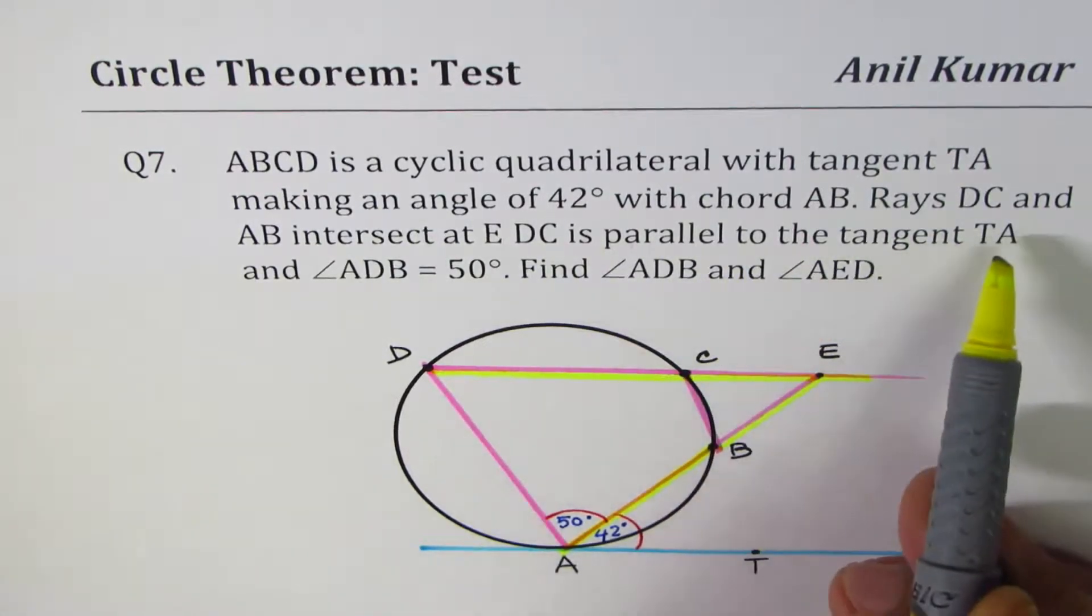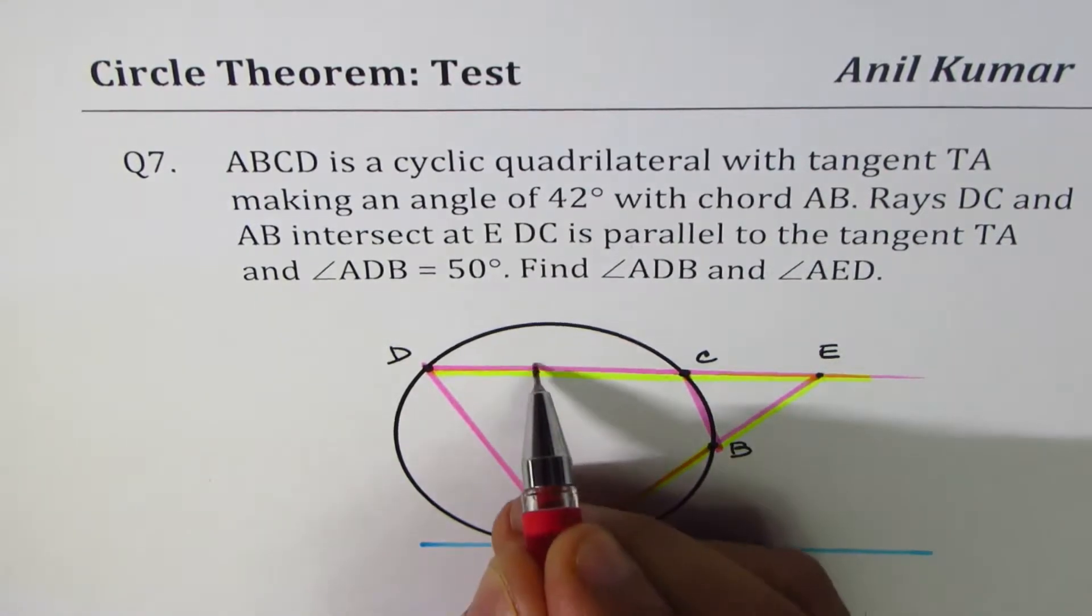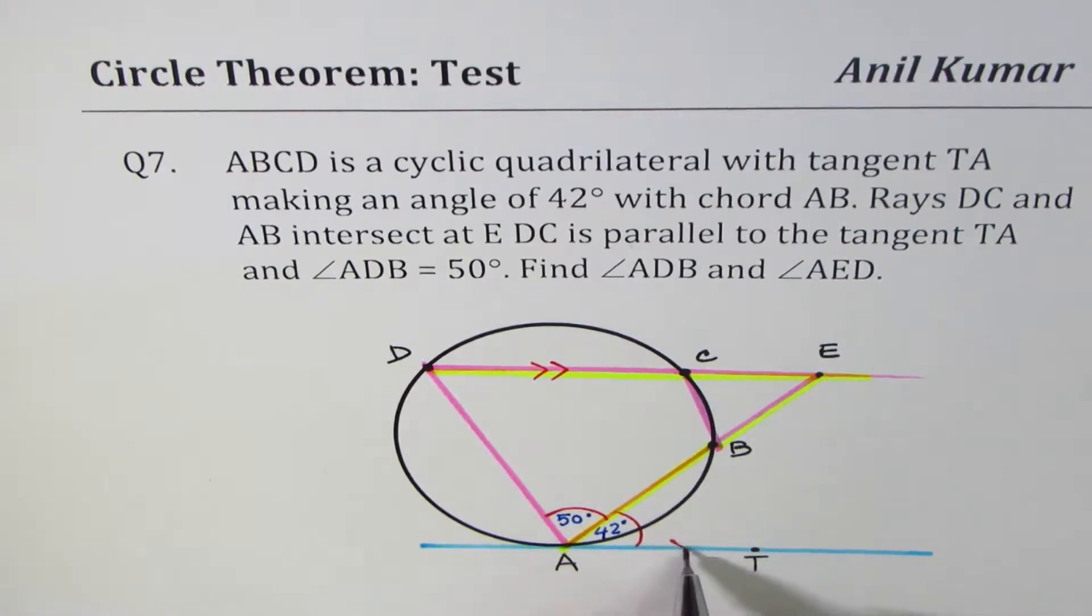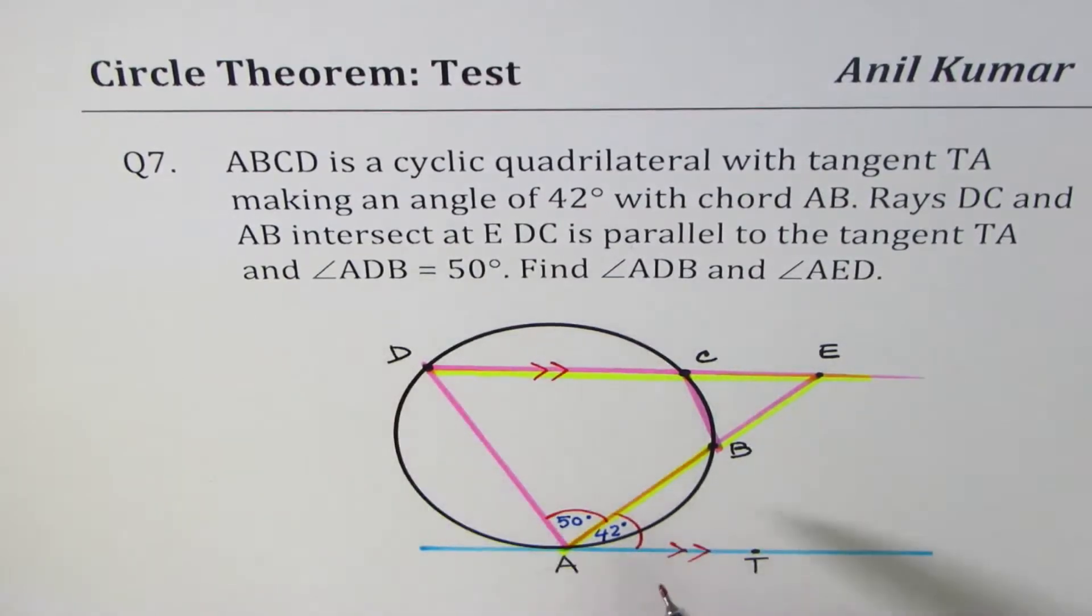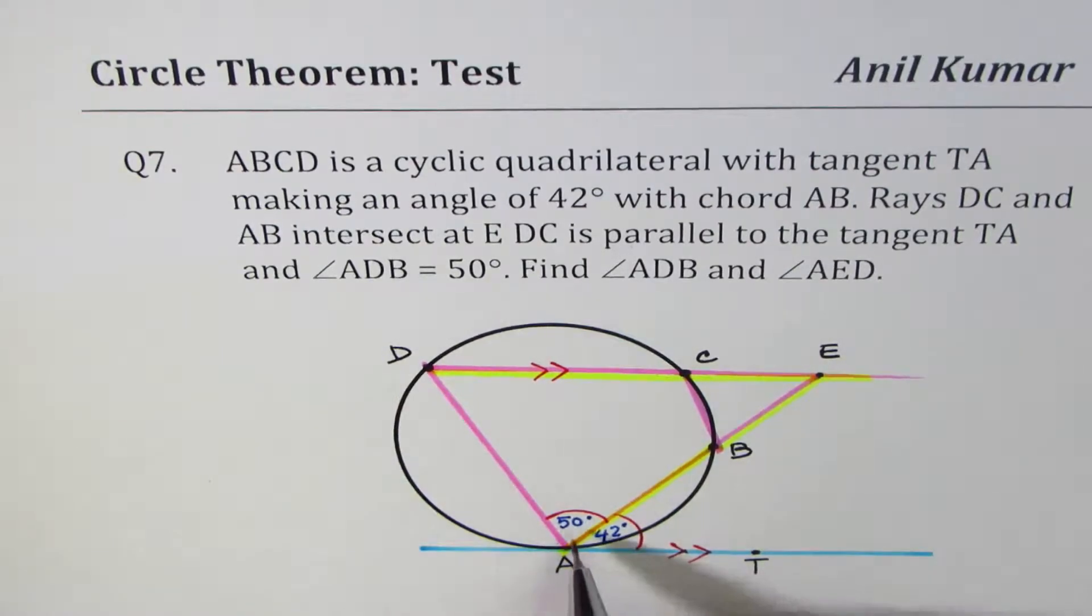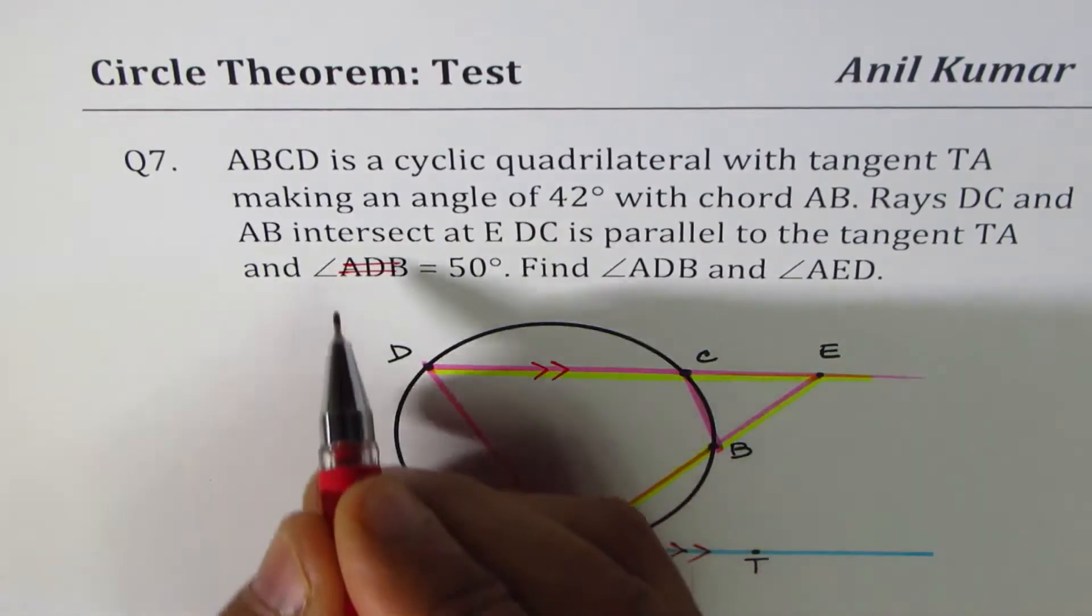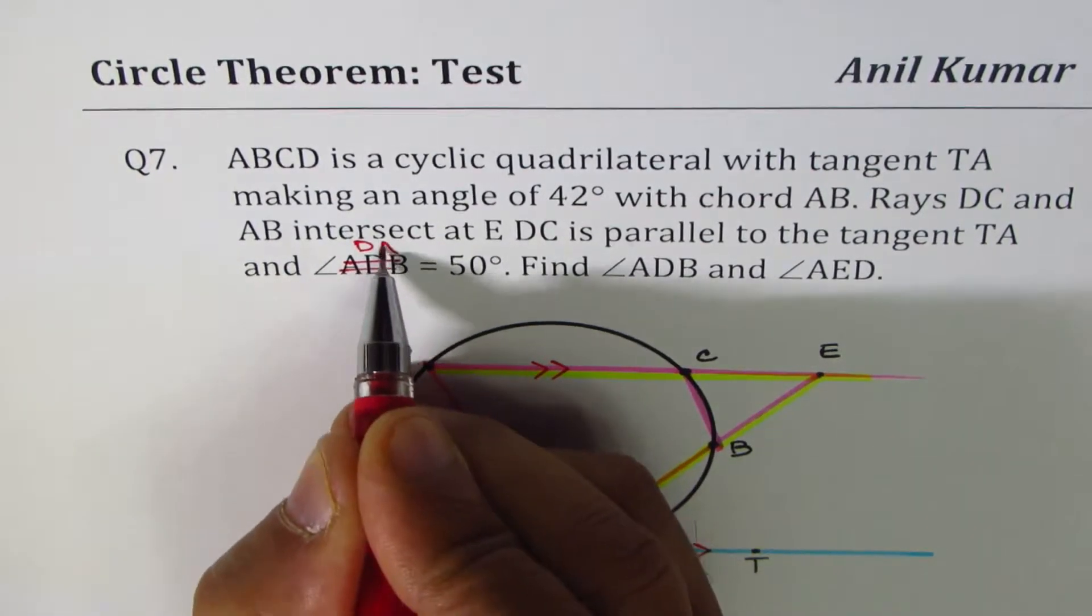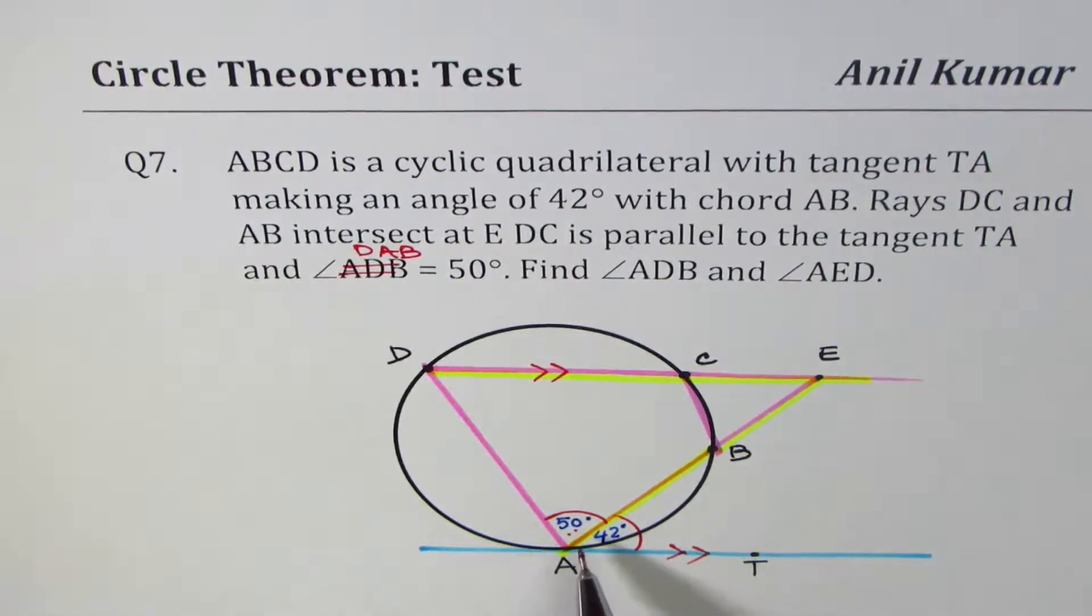DC is parallel to tangent DA. So what we're given here is that this line is parallel to the tangent DA. And angle DAB is 50 degrees. I think there's a typing error here. So I'll make this as angle DAB. So angle DAB as shown in the figure is 50 degrees.